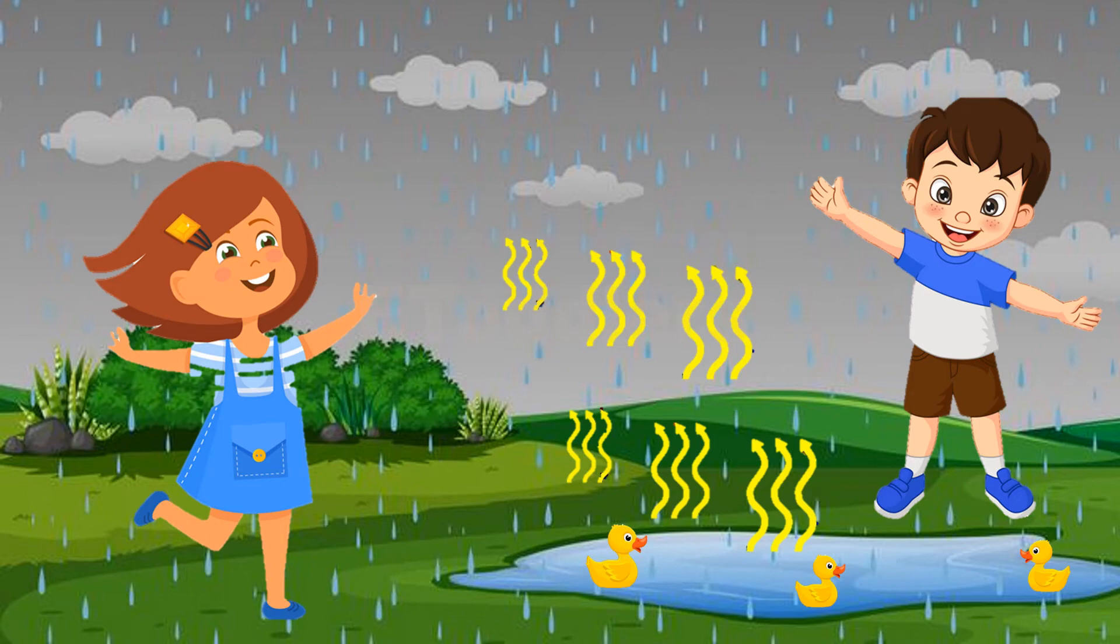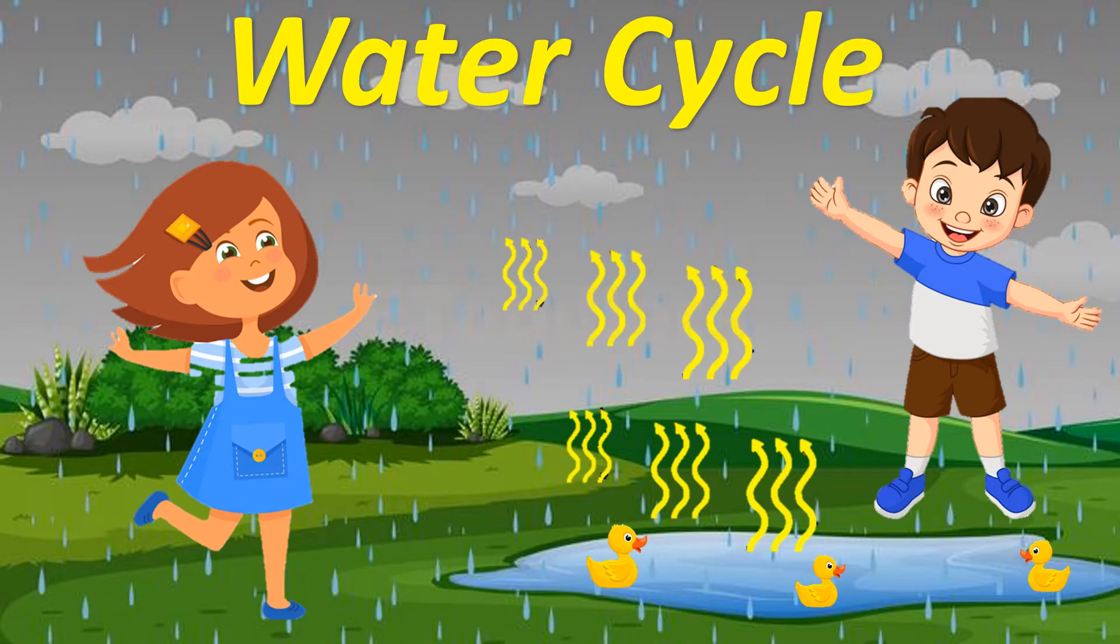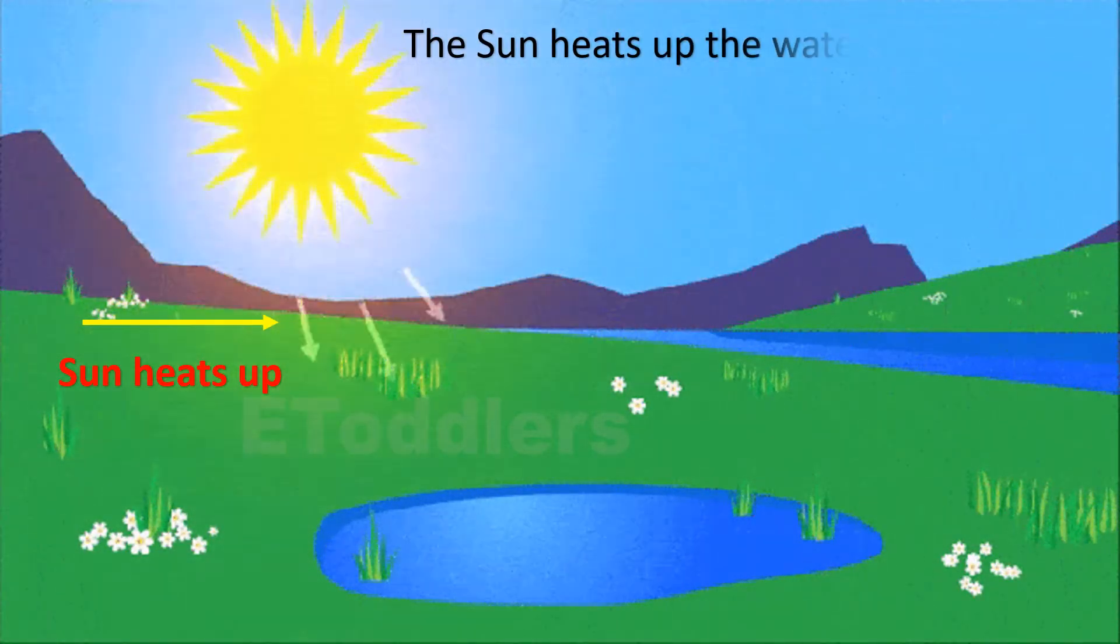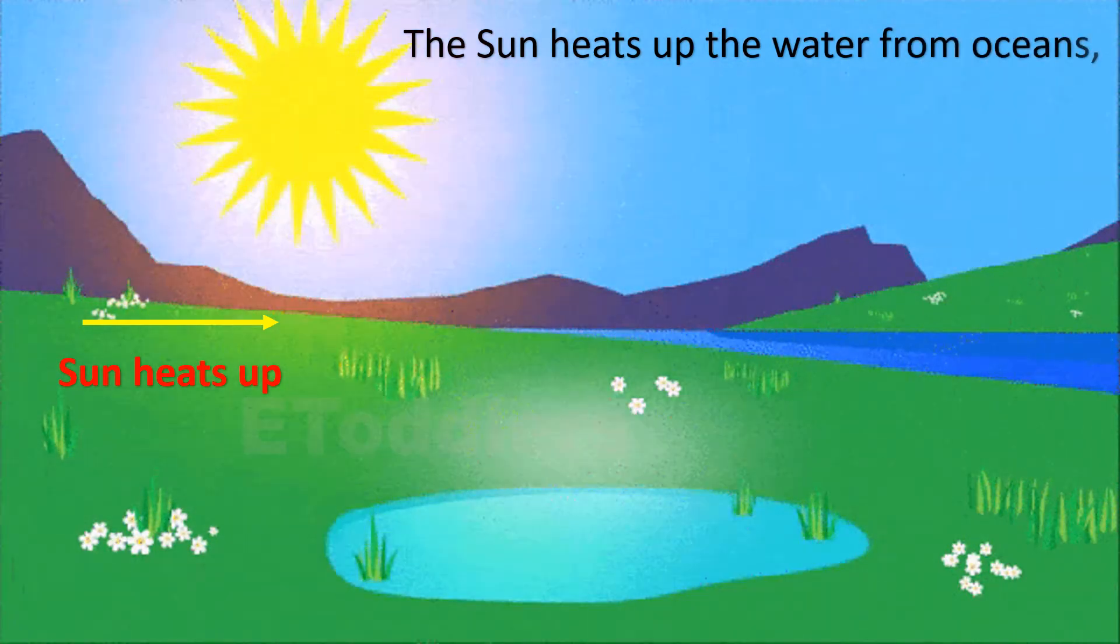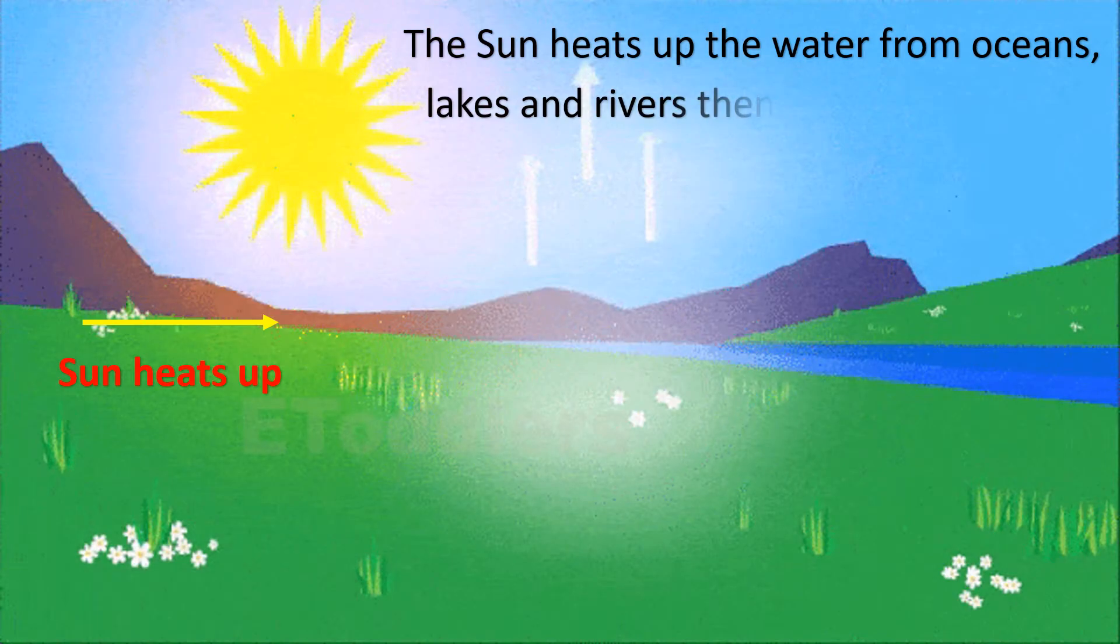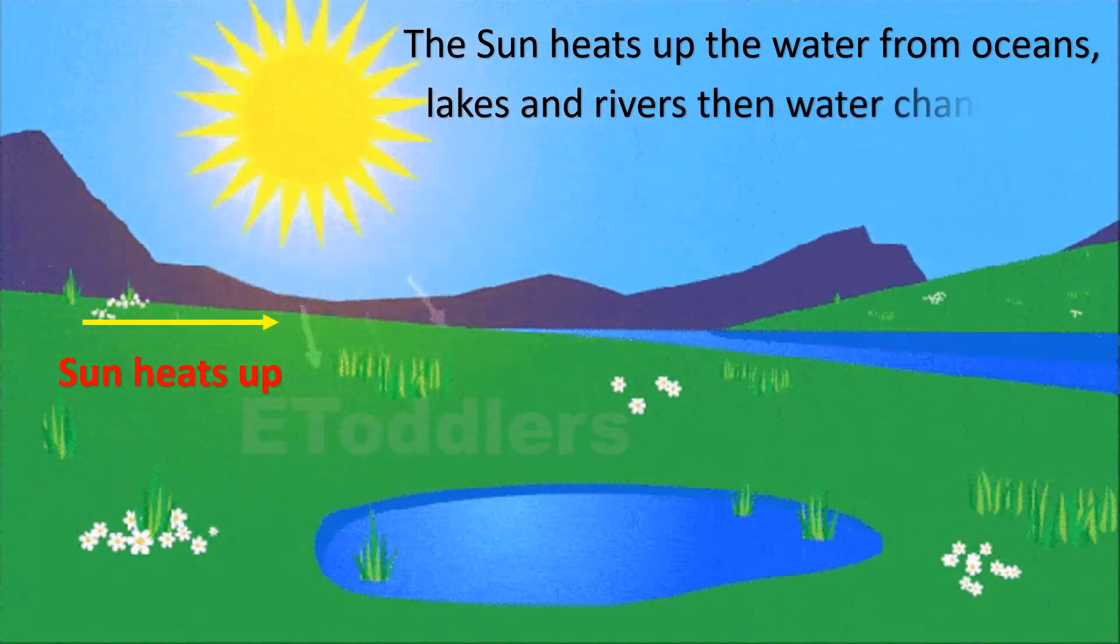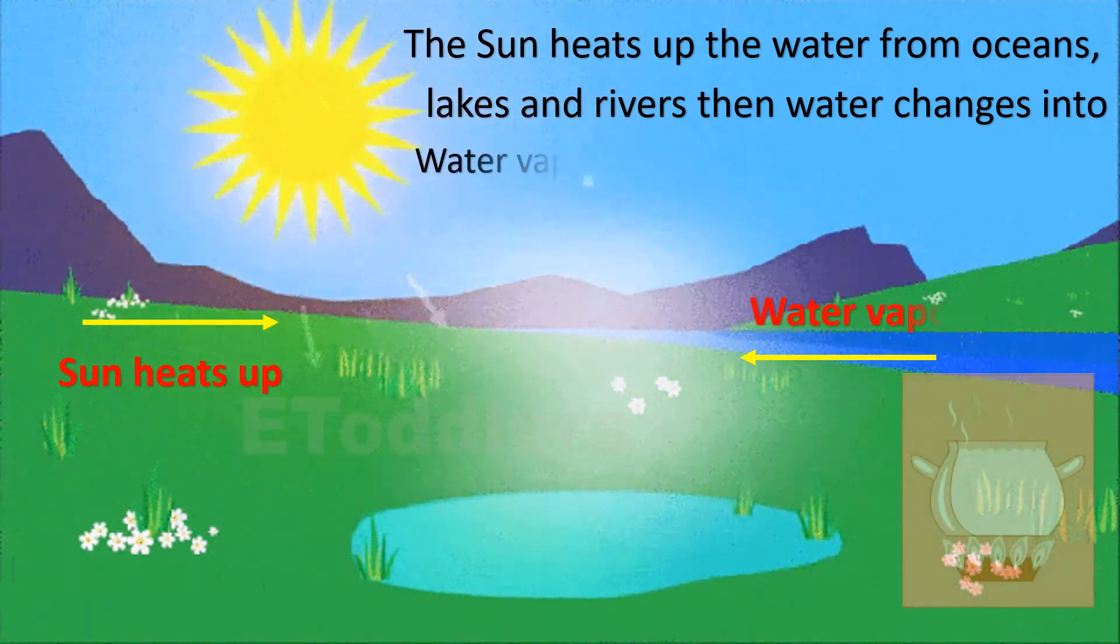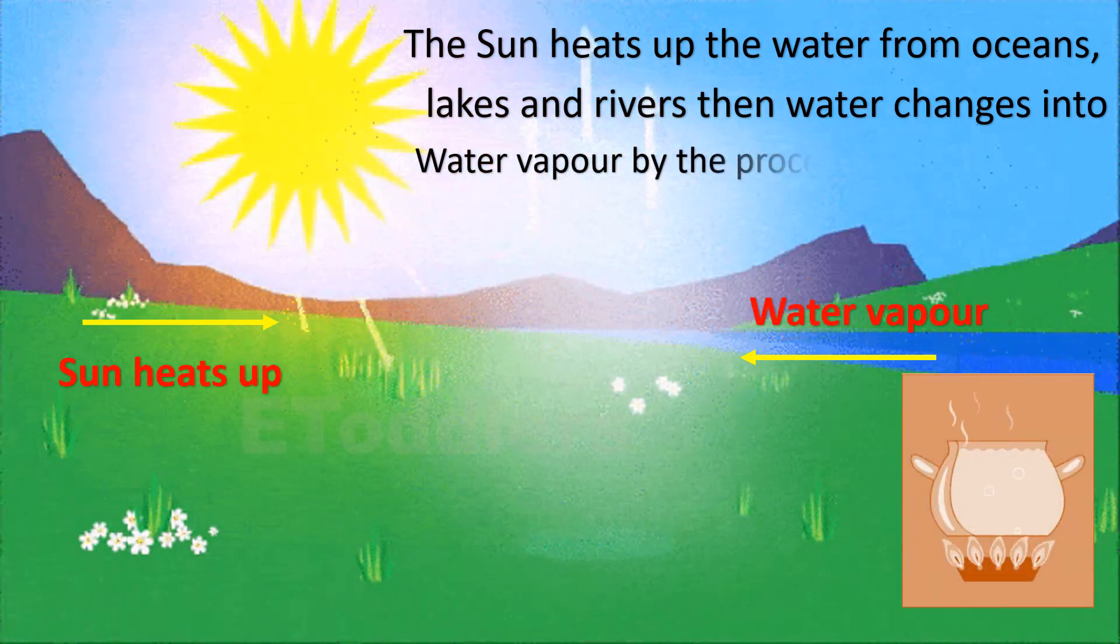Let's learn about water cycle. The sun heats up the water from oceans, lakes and rivers. Then water changes into water vapor by the process of evaporation.